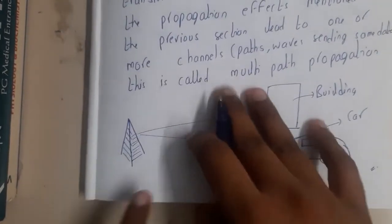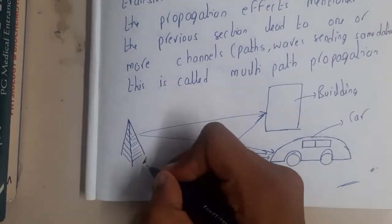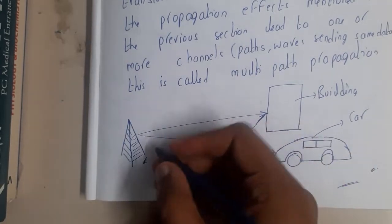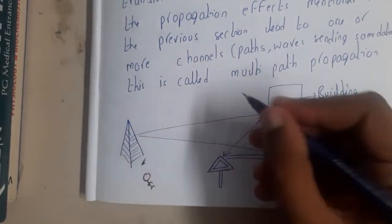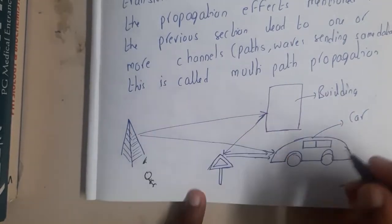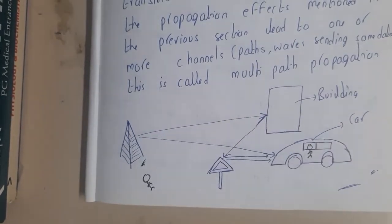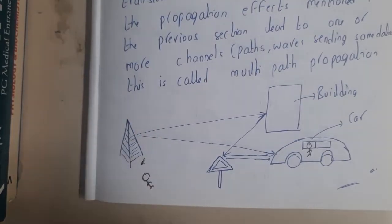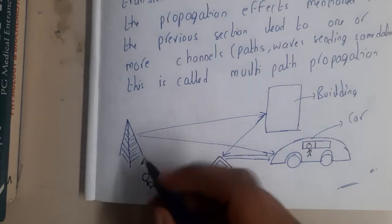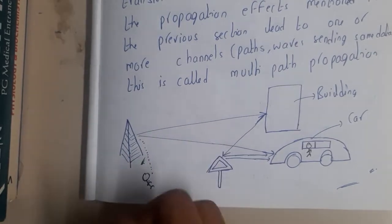Assume this is a military base. There is a person — the chief of military or someone — who wants to communicate with a particular person sitting in a car. He is sending his signals, or his information in the form of signals, to a tower, which is then trying to send the data to that particular person.